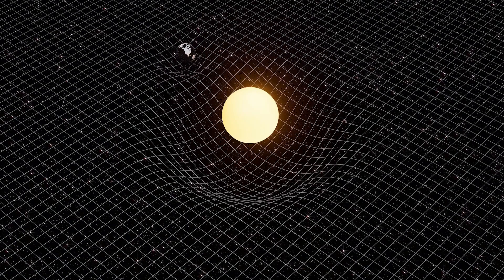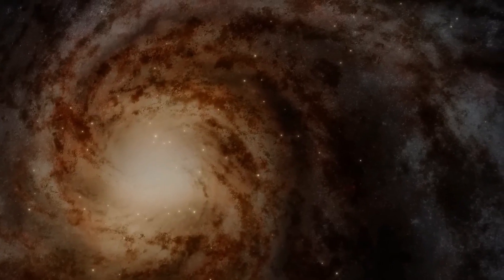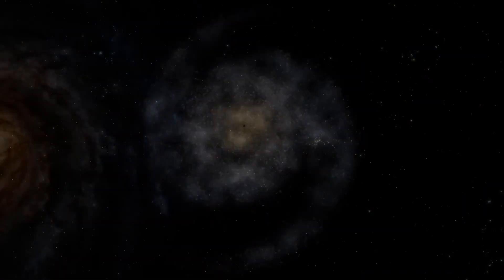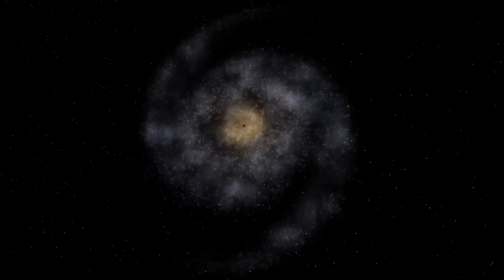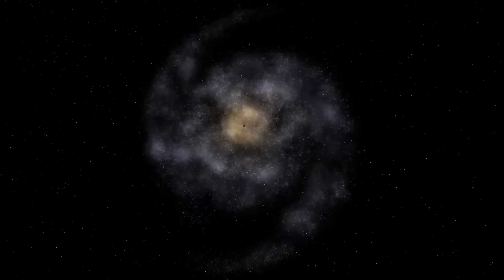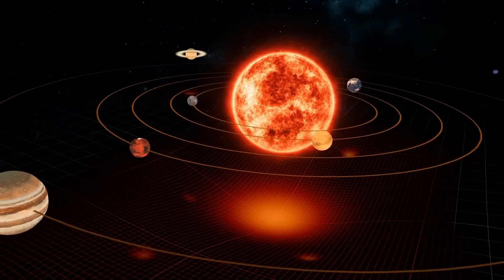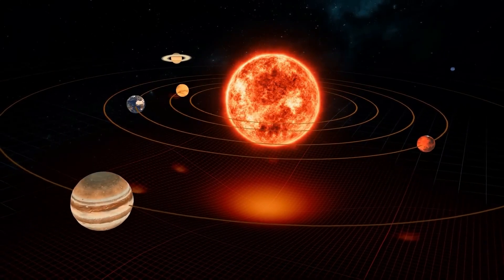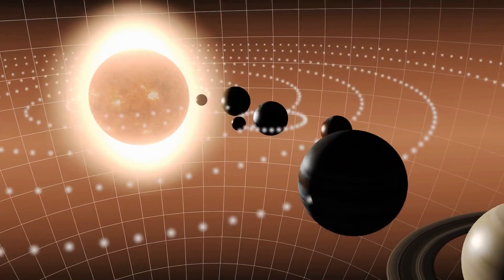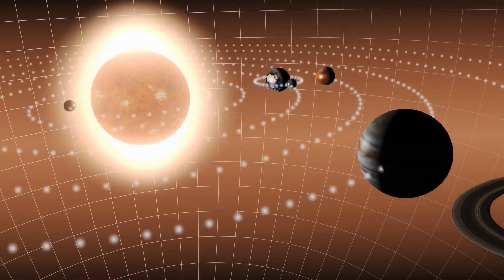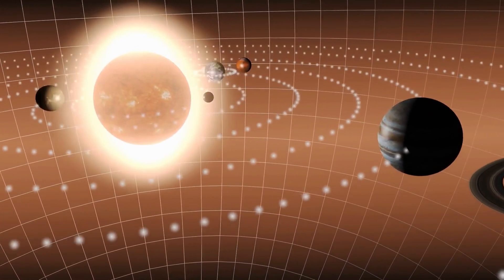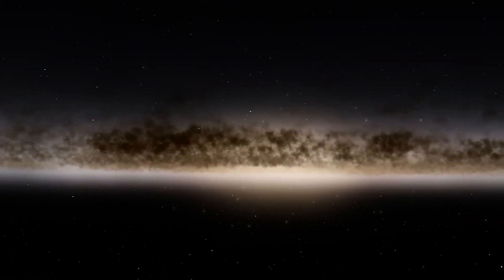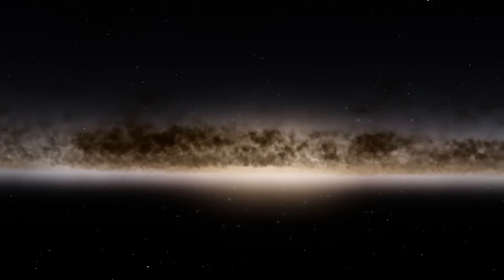Penrose leans towards adjusting the laws of gravity rather than introducing an unseen form of matter. To him, dark matter acts as a placeholder, indicating our lack of comprehension of gravity's deeper workings. While Penrose recognizes the gravitational anomalies dark matter proponents highlight, he advocates for a deeper exploration of gravity's nature. For him, dark matter serves as a conceptual shortcut, delaying a thorough investigation into cosmic mysteries. Penrose's perspective challenges the mainstream narrative, urging the scientific community to reassess foundational understandings rather than relying on hypothetical entities like dark matter.